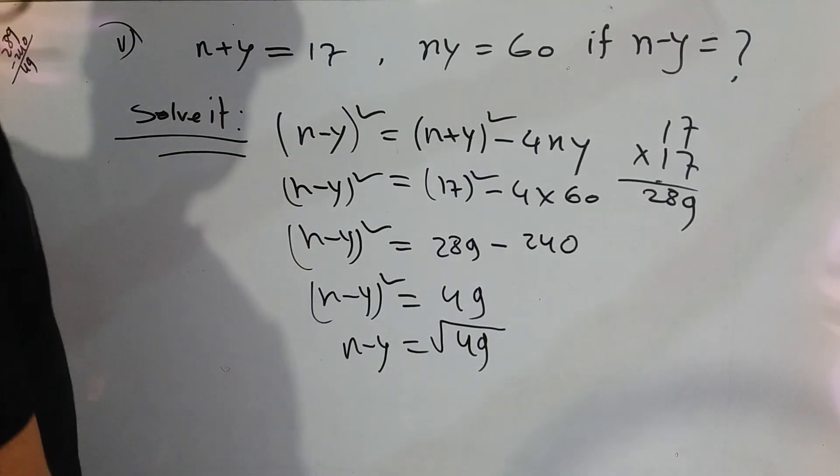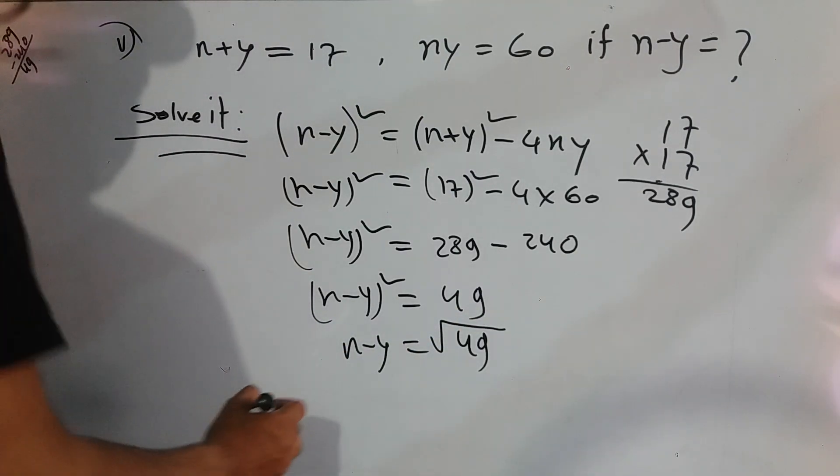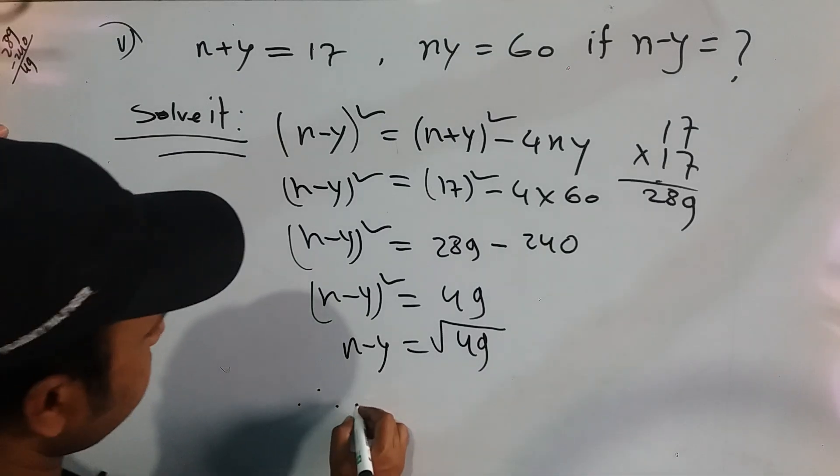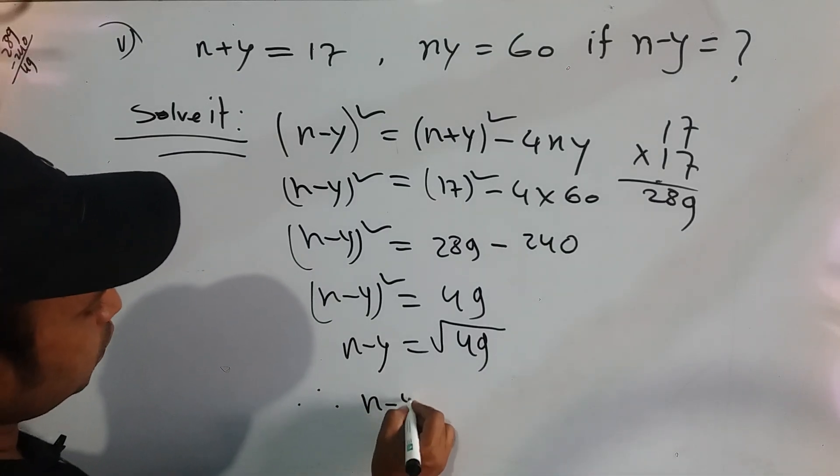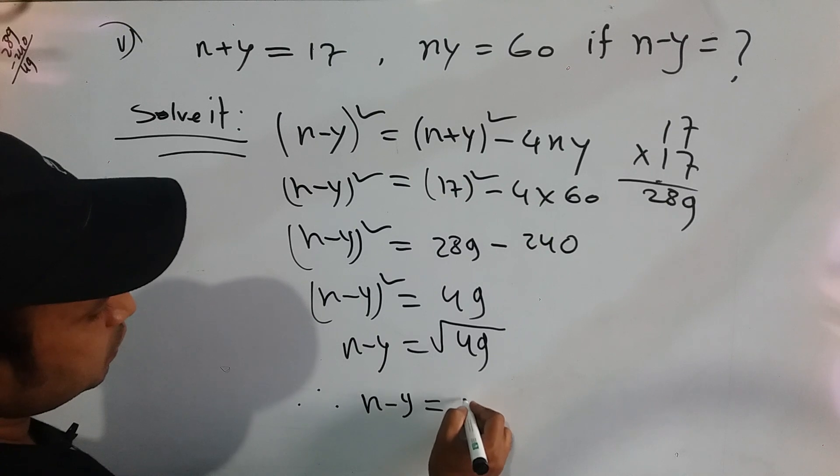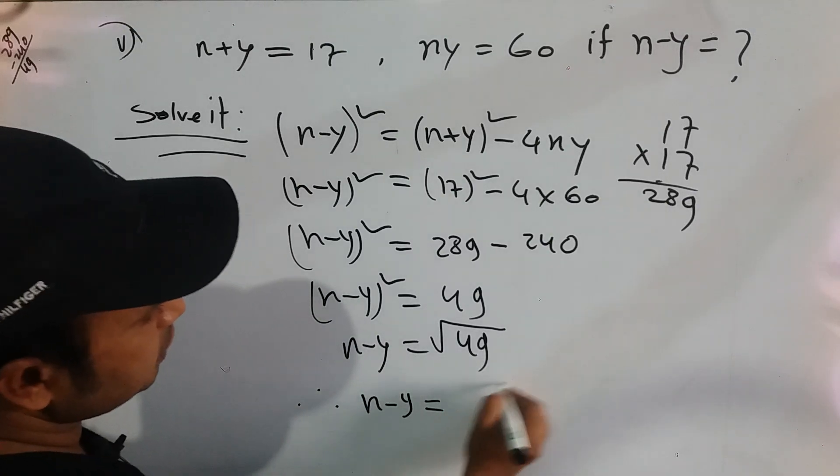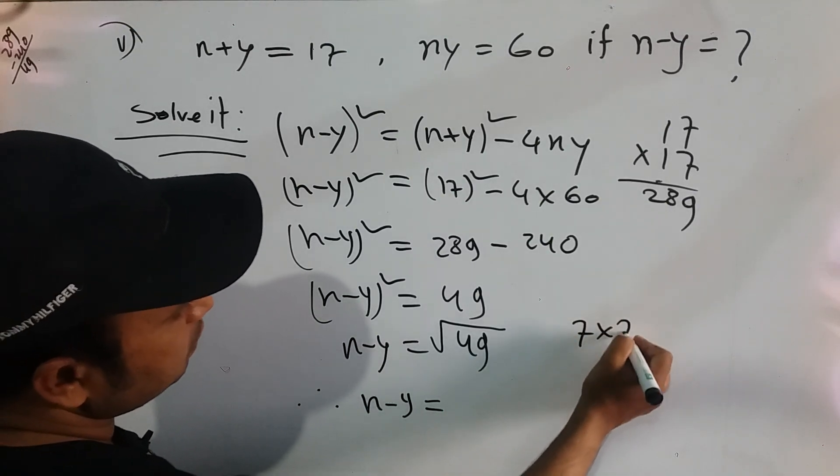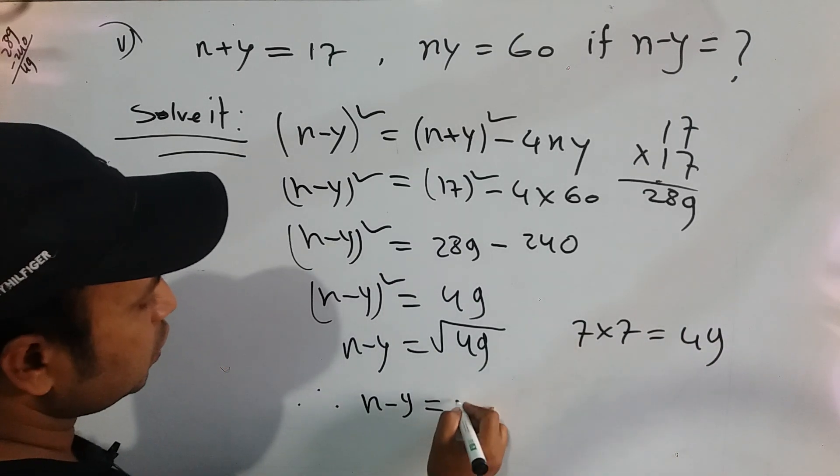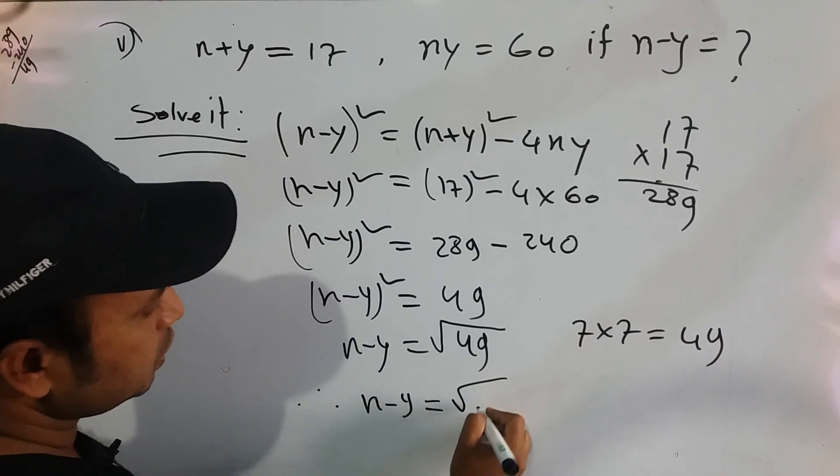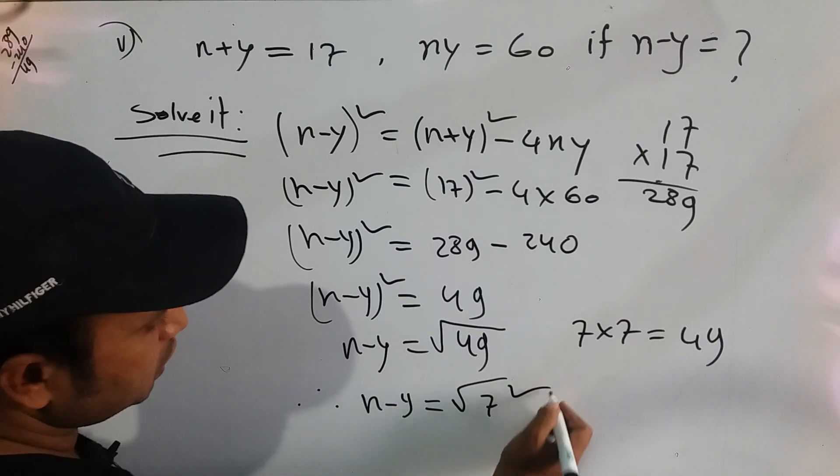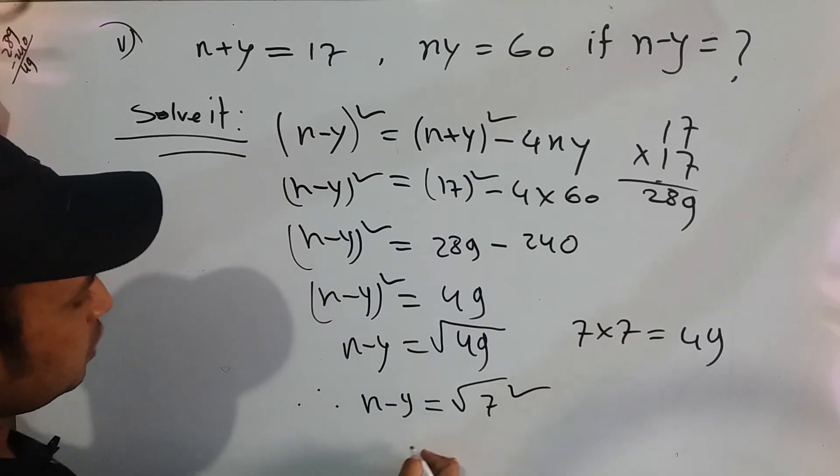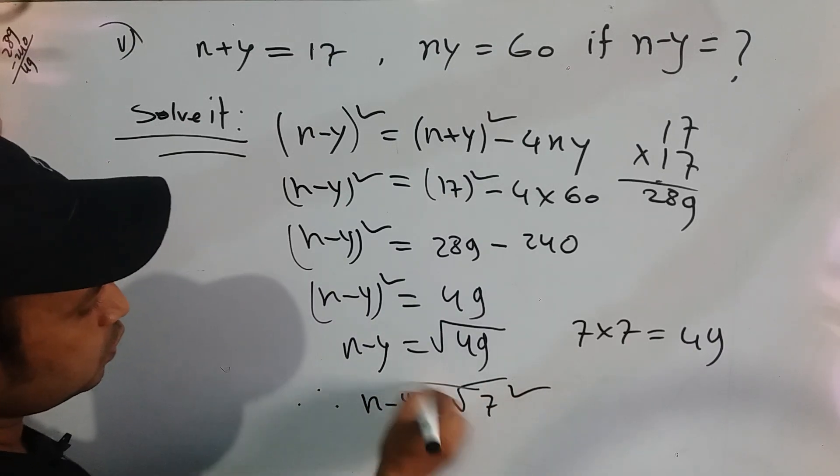So we can write down here x minus y equals root 49. 7 times 7, we know, is 49. So we root out, that's why we input 7 whole square, 7 square. So root and square out.